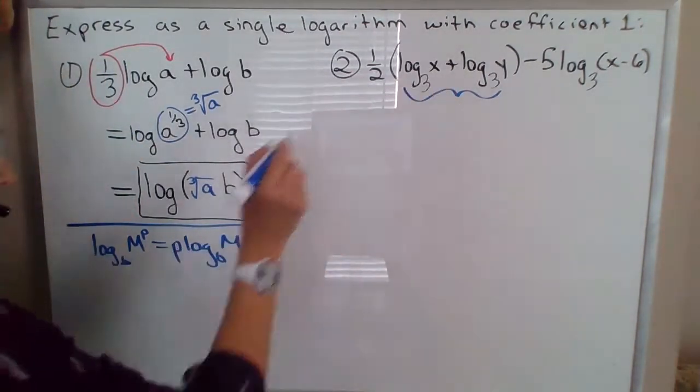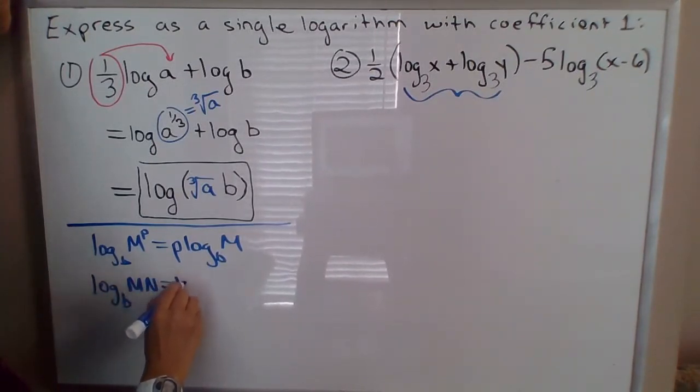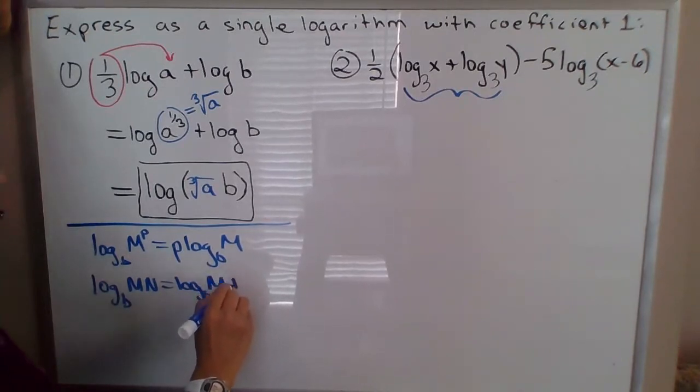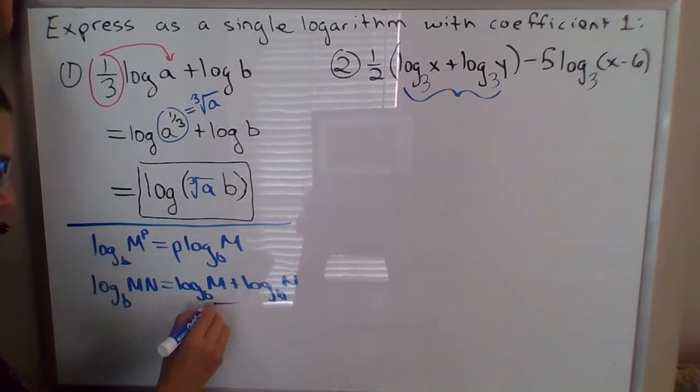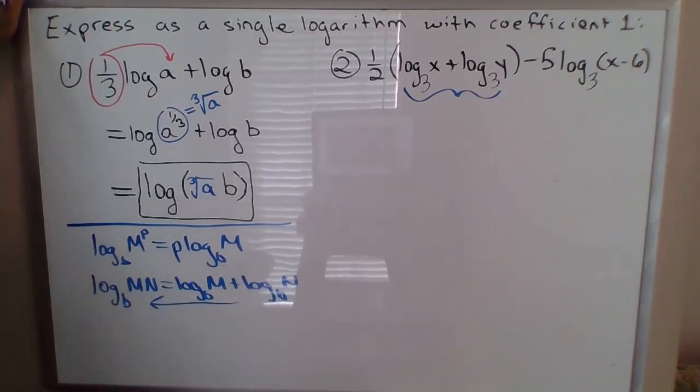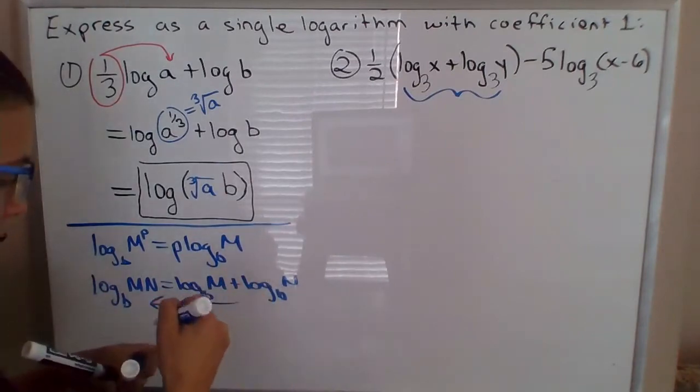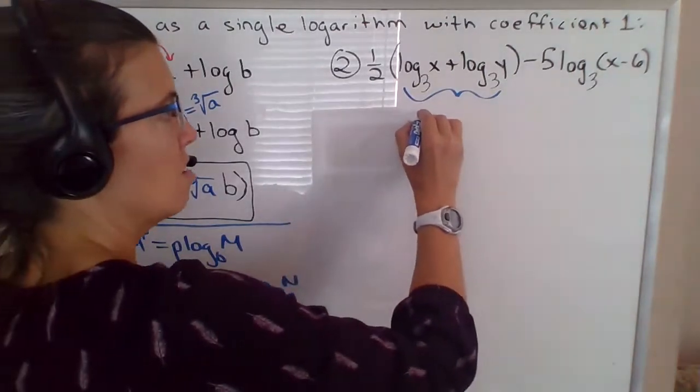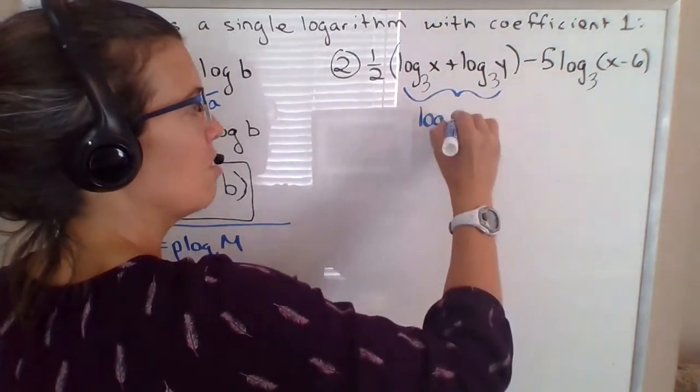So I'm going to do that using, I wrote this down a minute ago, but I think it's worth writing again, using this property of logarithms. But going in the reverse direction of how we went in the previous examples. So take that sum of two logarithms and express it as a single log. This time it's log base three of x times y.